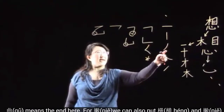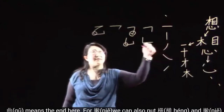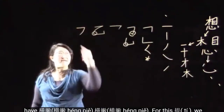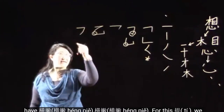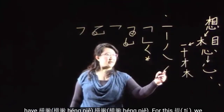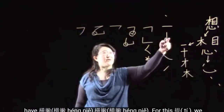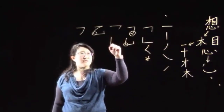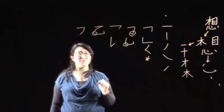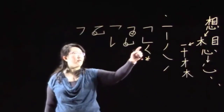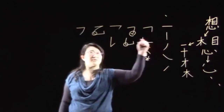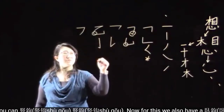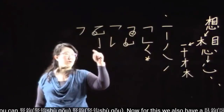So what you have for pié — we can also put heng and pié together, you can have heng pié. For this ti, we can look at it with shu; you can have shu ti. And of course shu can also have gou together — you can have shu gou.